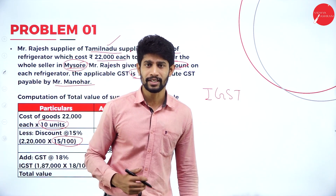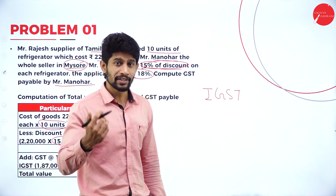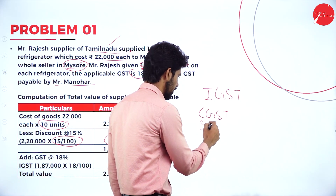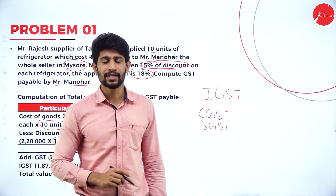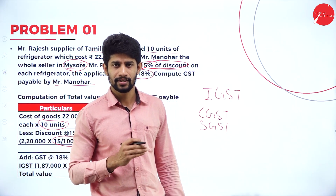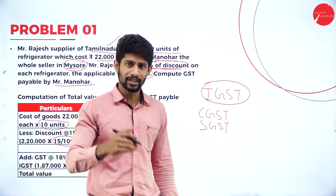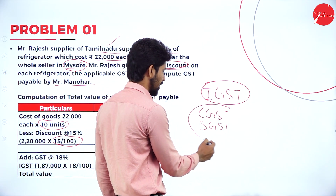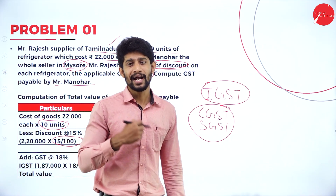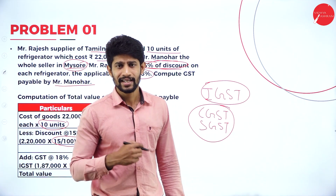In case the transaction is happening within the state — from Mysore to Bangalore, from Tumkur to Shimoga, from Dharwad to Hubli — then CGST and SGST are applicable. If the transaction is happening between two states like Bihar and Rajasthan, IGST is applicable. If you go to a mall to purchase clothes, CGST and SGST is applicable because the buyer and the seller are in the same state.